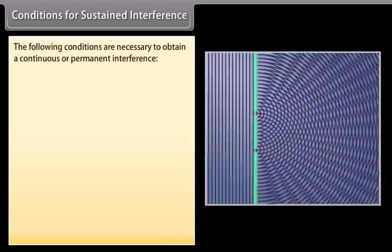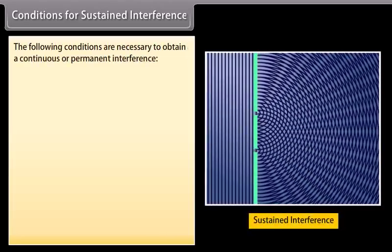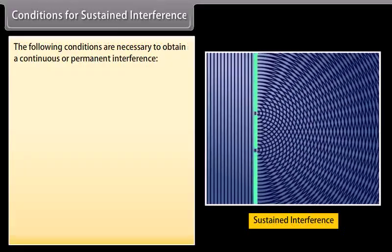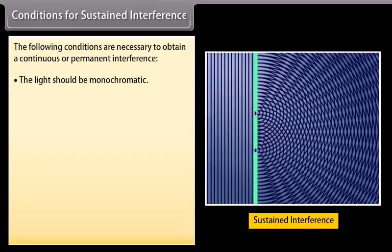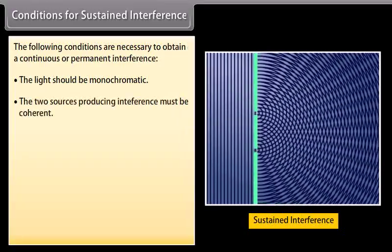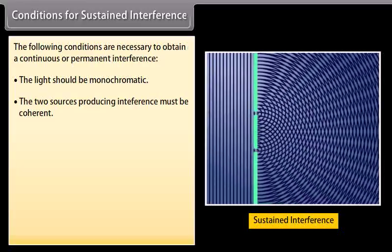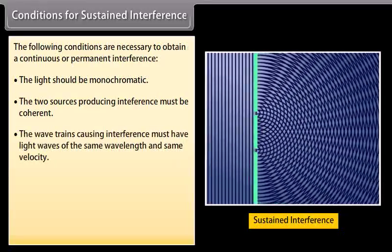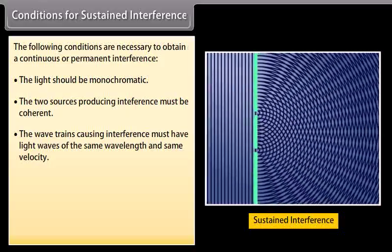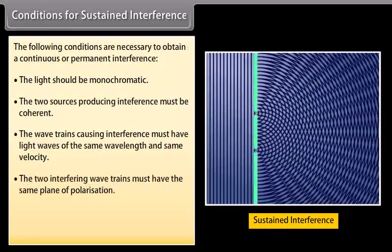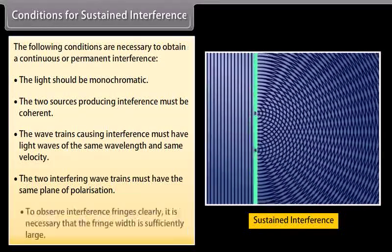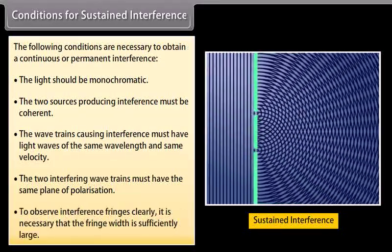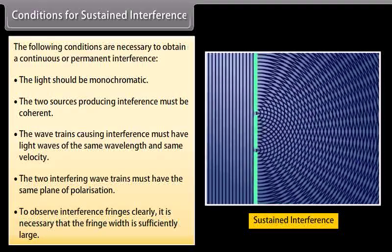Conditions for sustained interference: the light should be monochromatic, otherwise fringes of different colors will overlap. The two sources must be coherent. The wave trains must have light waves of the same wavelength and same velocity. The two interfering wave trains must have the same plane of polarization. To observe interference fringes clearly, the fringe width must be sufficiently large.